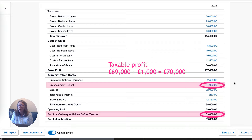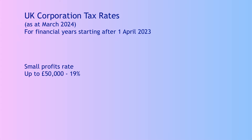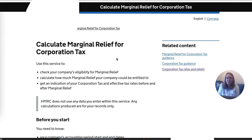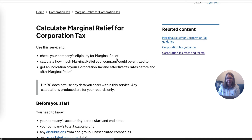Now we need to work out what our tax is going to be. The tax rates in the UK start at 19% if your profits are below £50,000, and then it goes on a sliding scale after that. For profits from £50,000 to £250,000, your rate of corporation tax will increase from 19% up to 25%.